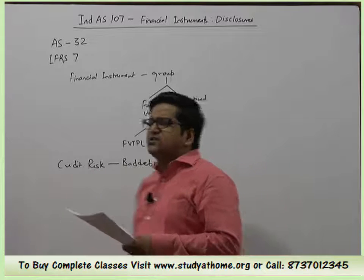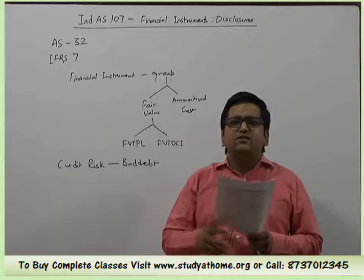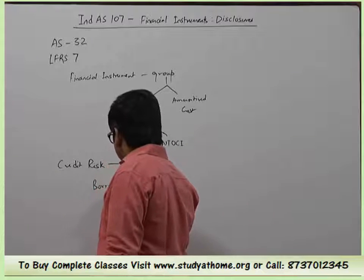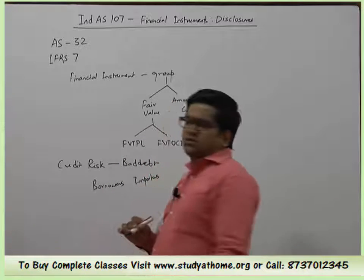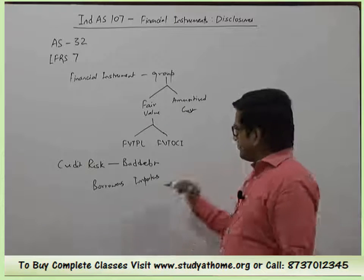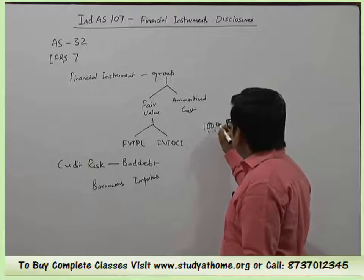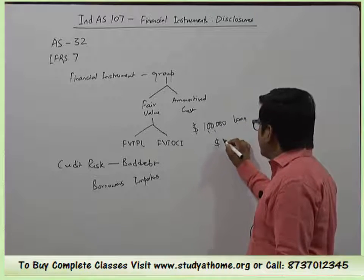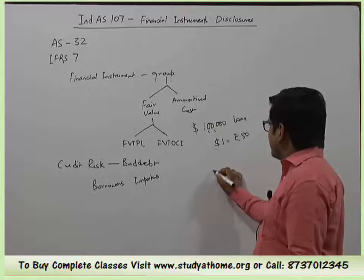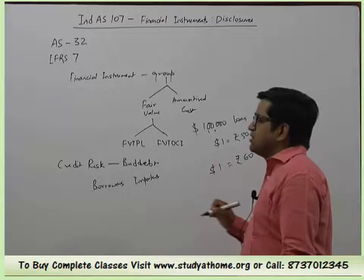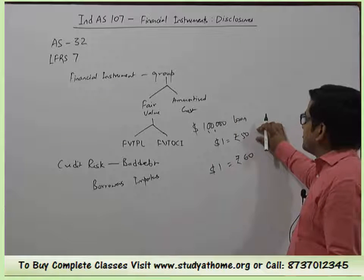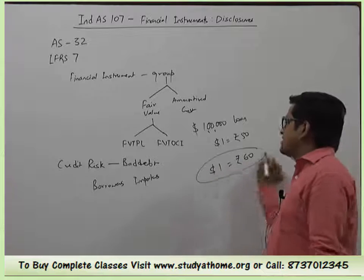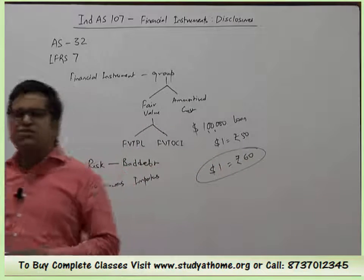Currency Risk means the risk arising from exchange rate fluctuation. Borrowers and importers face this risk. For example, if a borrower took a loan of $1 lakh when the dollar rate was ₹50, but at repayment time the rate is ₹60, then the principal repayment rises from ₹50 lakh to ₹60 lakh — apart from interest already paid. Exchange rate fluctuation can force you to make higher payments. This is called currency risk.